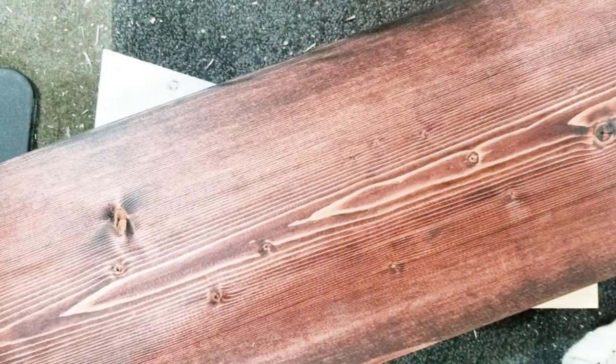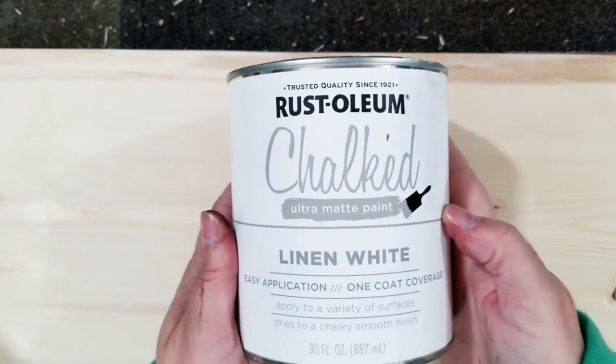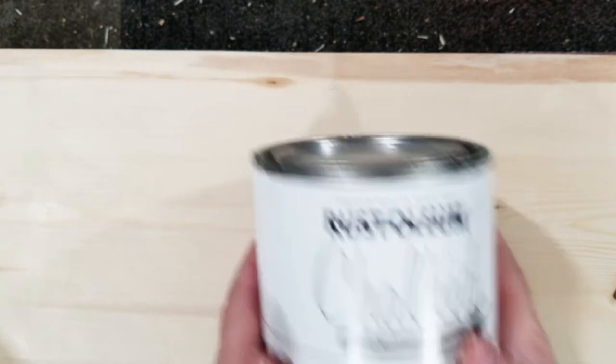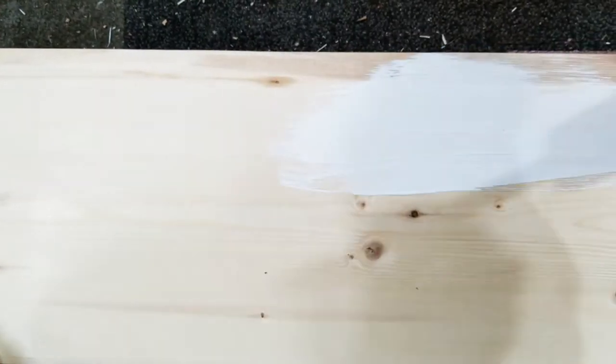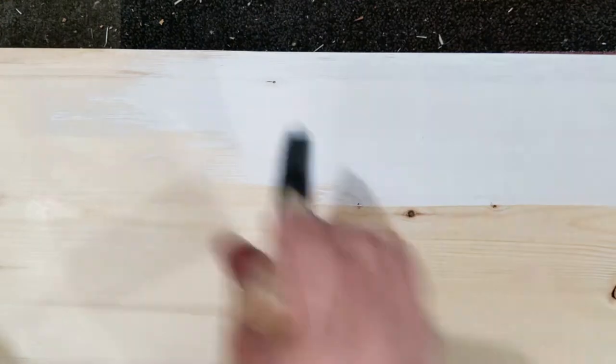So I did two of those and then the third one I wanted to have a Grinch Christmas Eve Grinch tray. So I'm using this white paint from Rust-Oleum. It's their chalk paint and I'm painting the bottom and the sides of this one with the white.